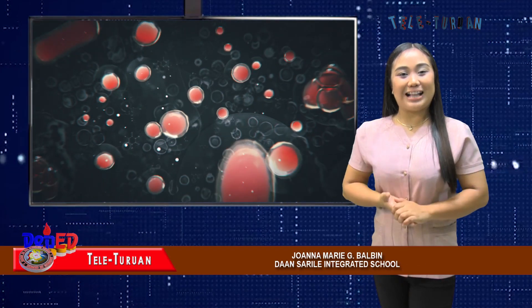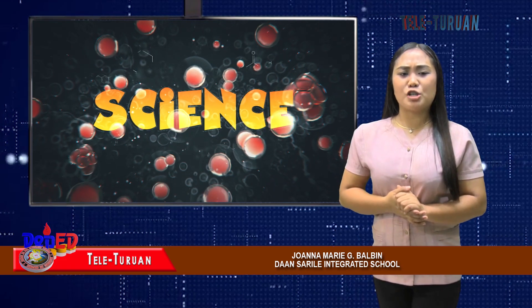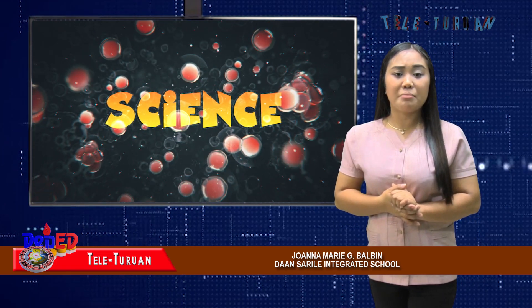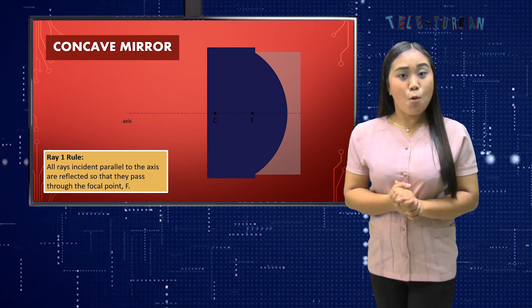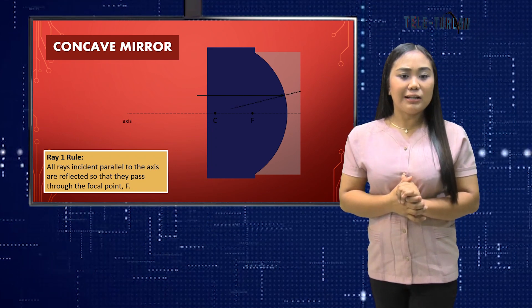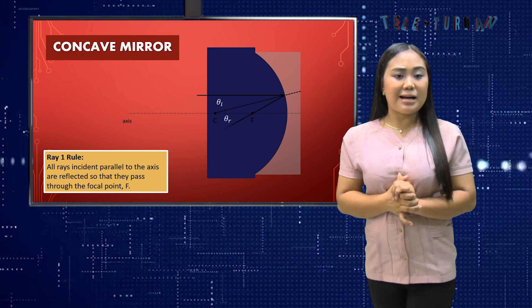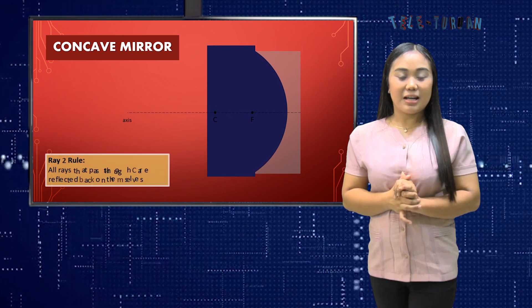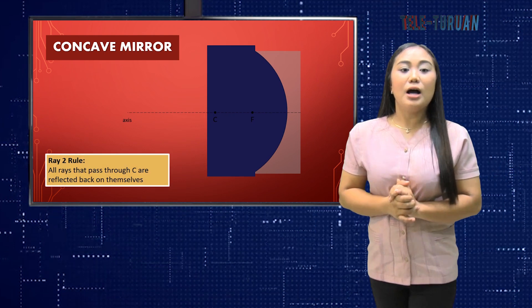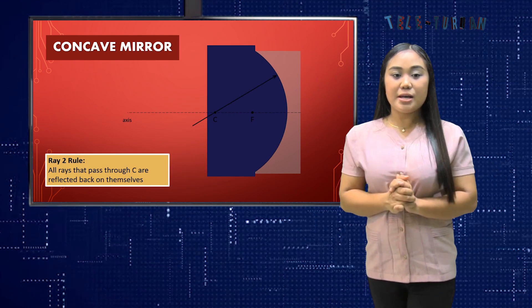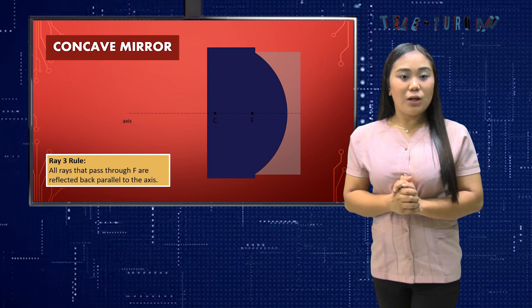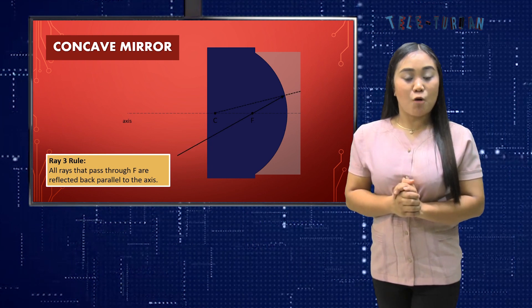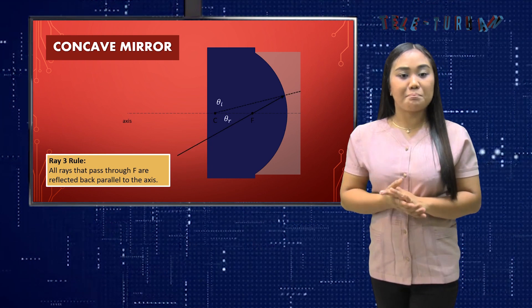Welcome back to Teleturuan. Ray diagrams help us visualize the type and location of an image formed by a spherical mirror. Let us proceed to concave mirrors. Ray 1 rule: all rays incident parallel to the axis are reflected so that they pass through the focal point F. Ray 2 rule: all rays that pass through C are reflected back on themselves. Ray 3 rule: all rays that pass through F or the focal point are reflected back parallel to the axis.